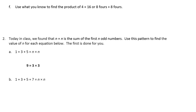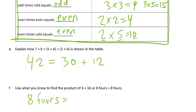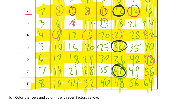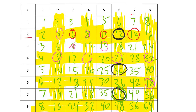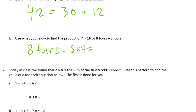Use what you know to find the product of four times sixteen, which is eight fours plus eight fours. What's eight fours? Eight times four — you can look it up in the table: look at the fours, one, two, three, four, five, six, seven, eight fours right here — that's thirty-two. So we have thirty-two plus thirty-two, which equals sixty-four.